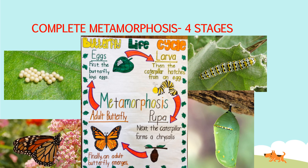Once they hatch, they can have food and eat some of that leaf. Then we have stage two, which is the larva — the caterpillar hatches from the egg. Number three is the pupa — the caterpillar forms a chrysalis. And then the last stage is the adult butterfly. Finally, an adult butterfly emerges.